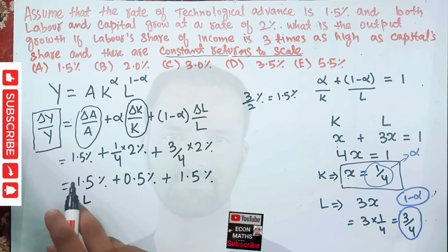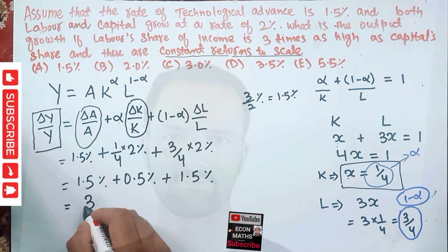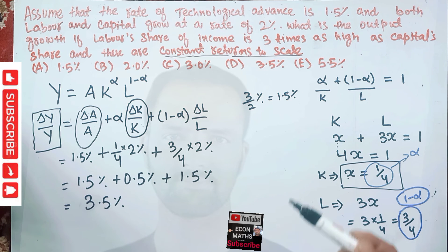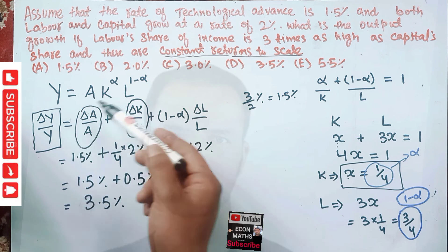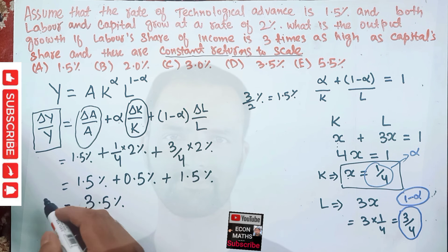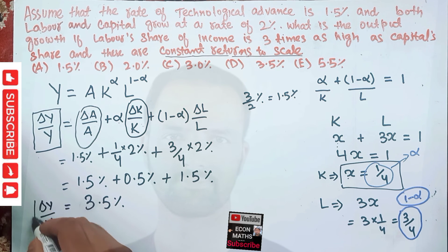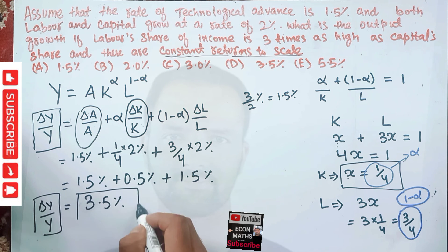That comes out to be 3.5%. So the output growth rate — ΔY/Y — will be equal to 3.5%.